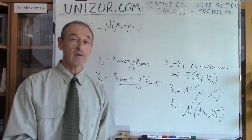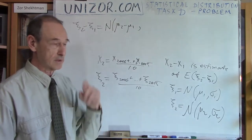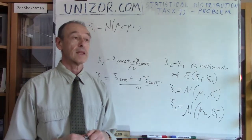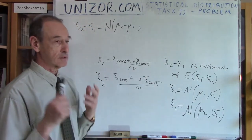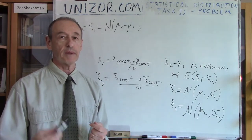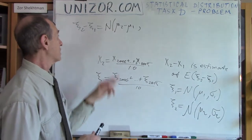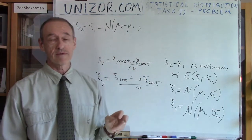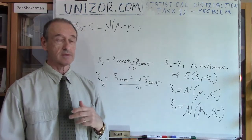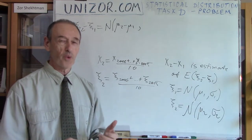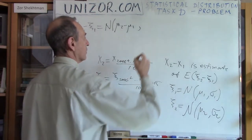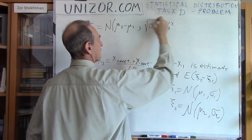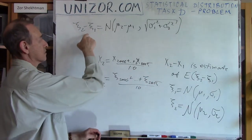Obviously these are two different numbers. The question is whether they are sufficiently different to constitute a real change in precipitation. The best way to approach this is to say that x̄₂ minus x̄₁ is an estimate of the mathematical expectation of the difference between them. So instead of comparing them to each other, I will compare x̄₂ minus x̄₁ with zero. That's much easier because now we have only one random variable: ξ₂ minus ξ₁.